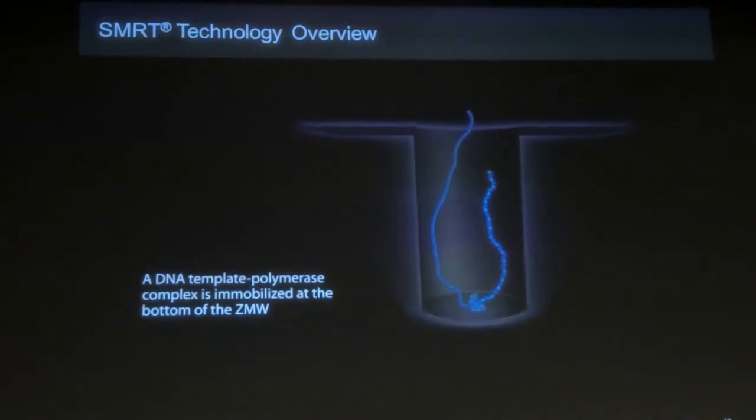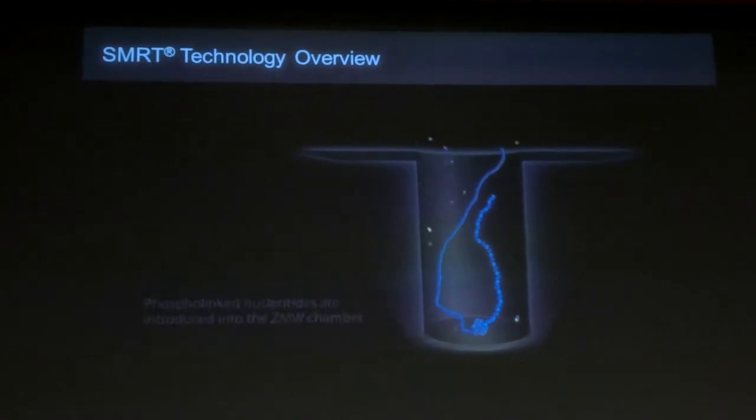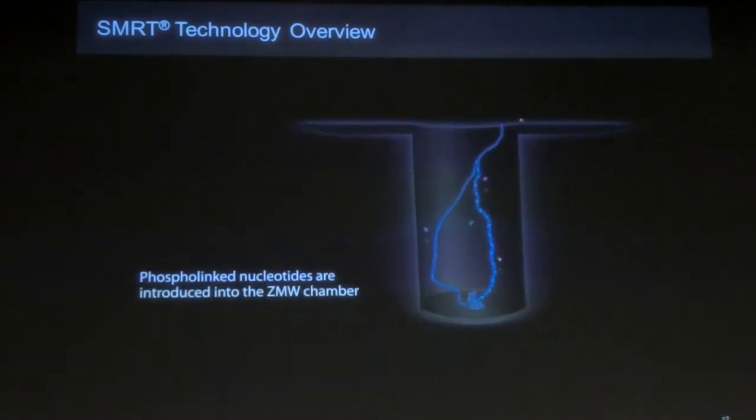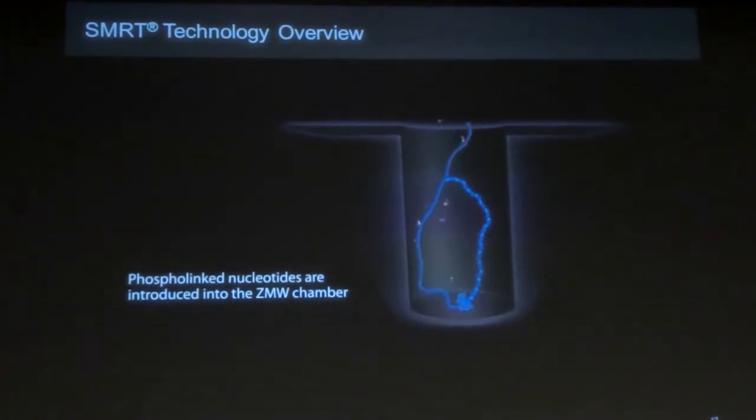That bottom of the zero-mode waveguide, we actually put a coating on there of a particular set of molecules which the enzyme wants to stick to. And that's what anchors it at the bottom. And then the nucleotides float around in suspension with their different fluorophores attached to it.